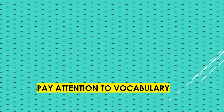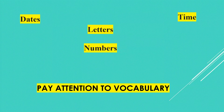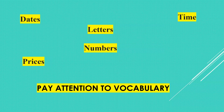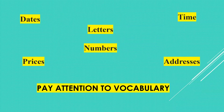Pay attention to the vocabulary. There are six types of vocabulary that can cause particular problems for students, and some of them will definitely be present in table completion questions. The six types are: time, numbers, prices, dates, letters, and addresses. You must be able to recognize them in speech and to write them correctly in your answers.